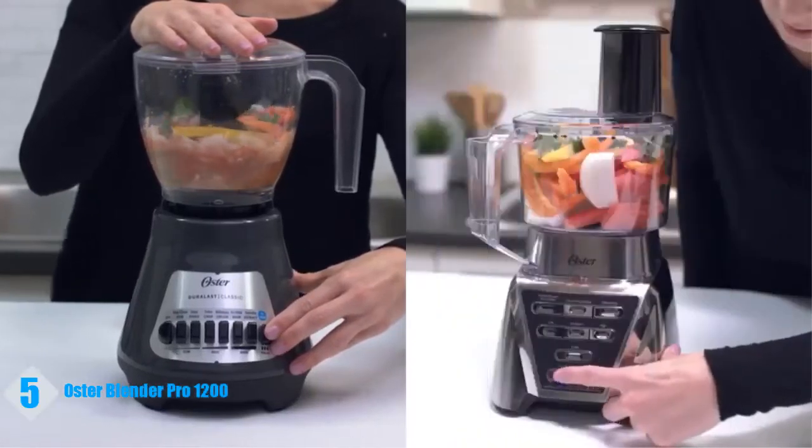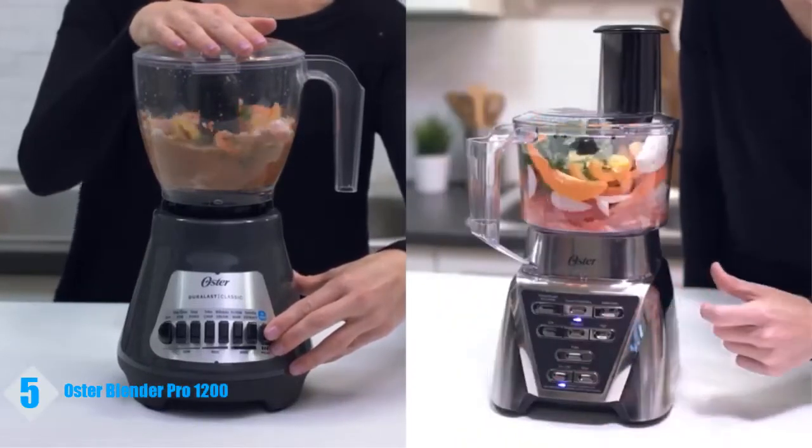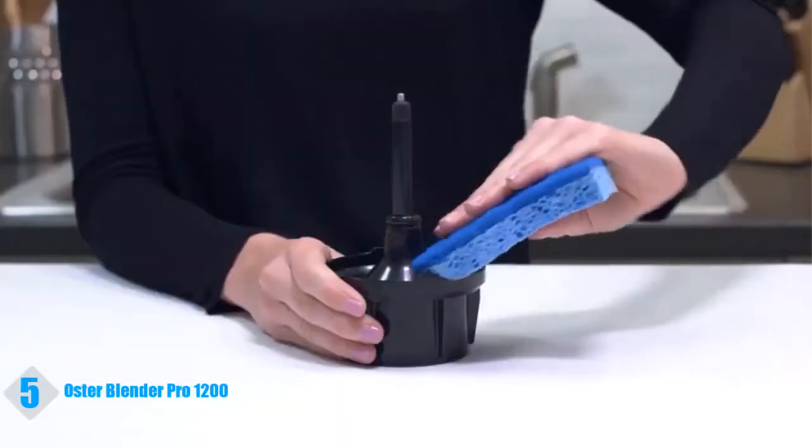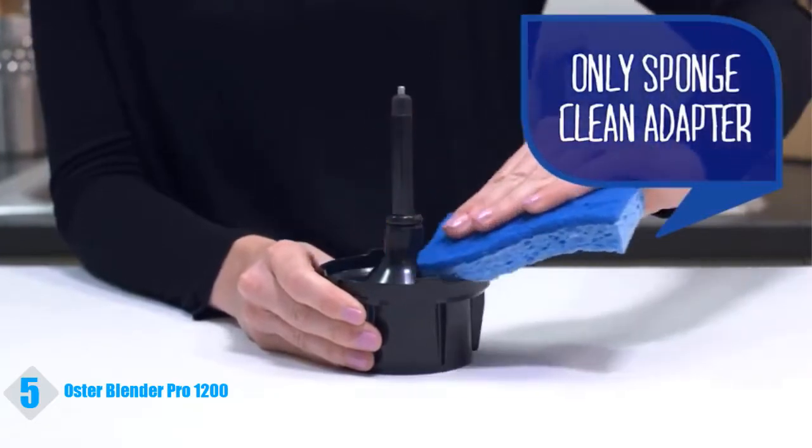The food chopper attachment is compatible with the Oster Classic Series blenders, and the food processor attachment is compatible with the Oster Pro Series blenders which have the extra wide blade system.